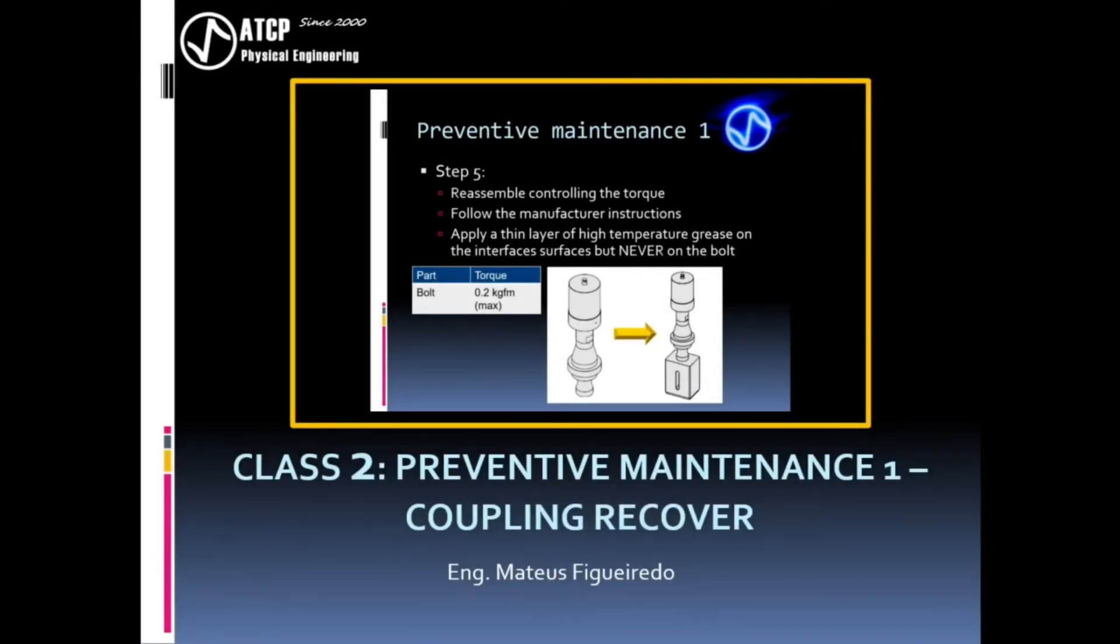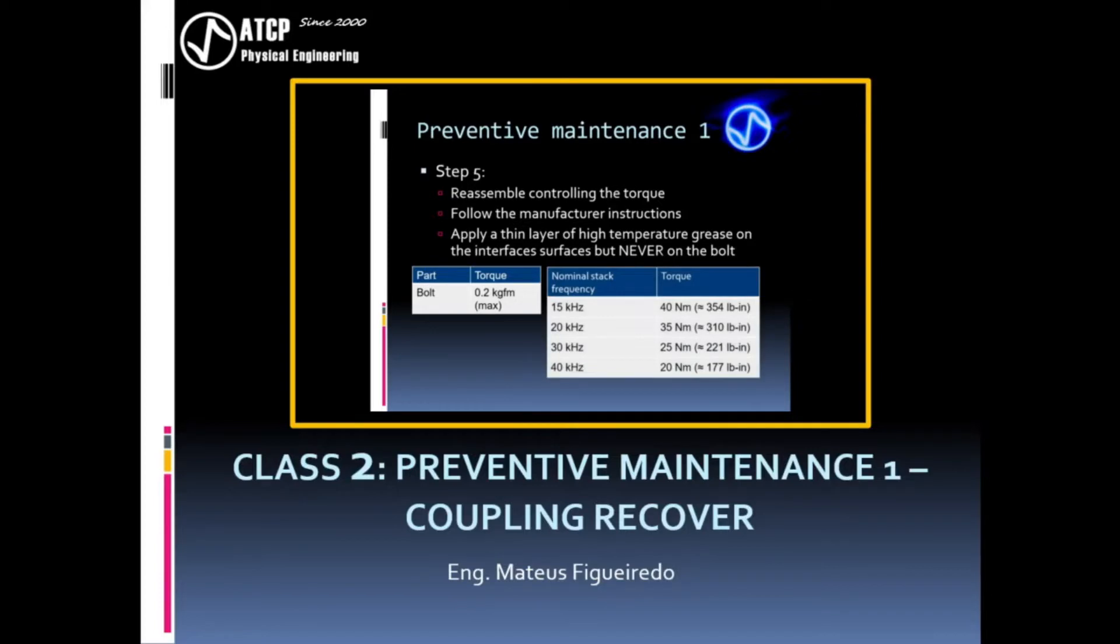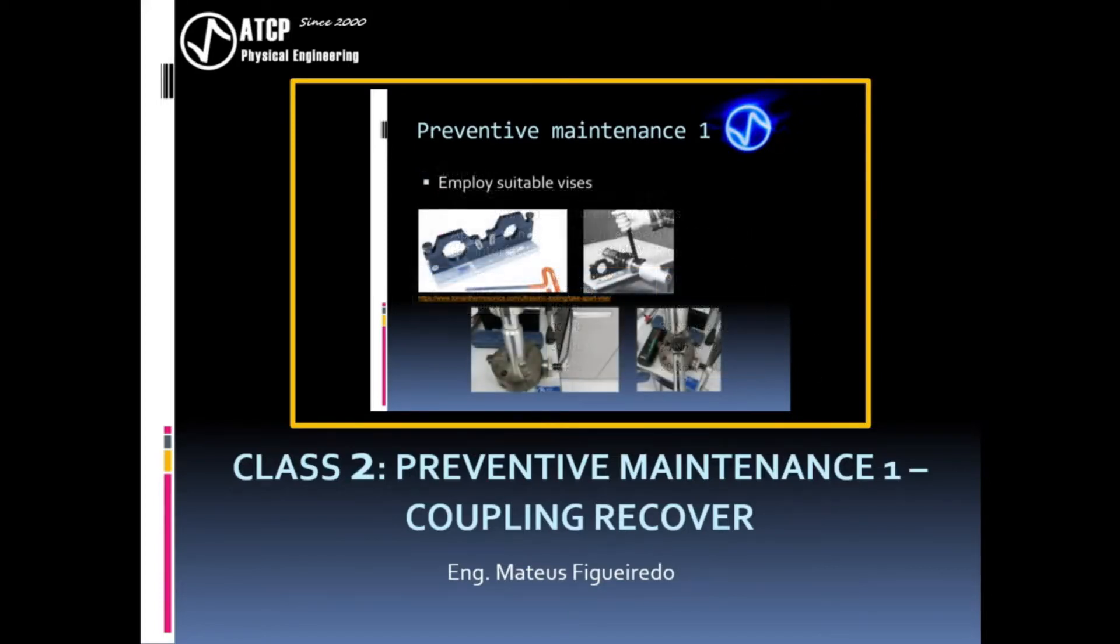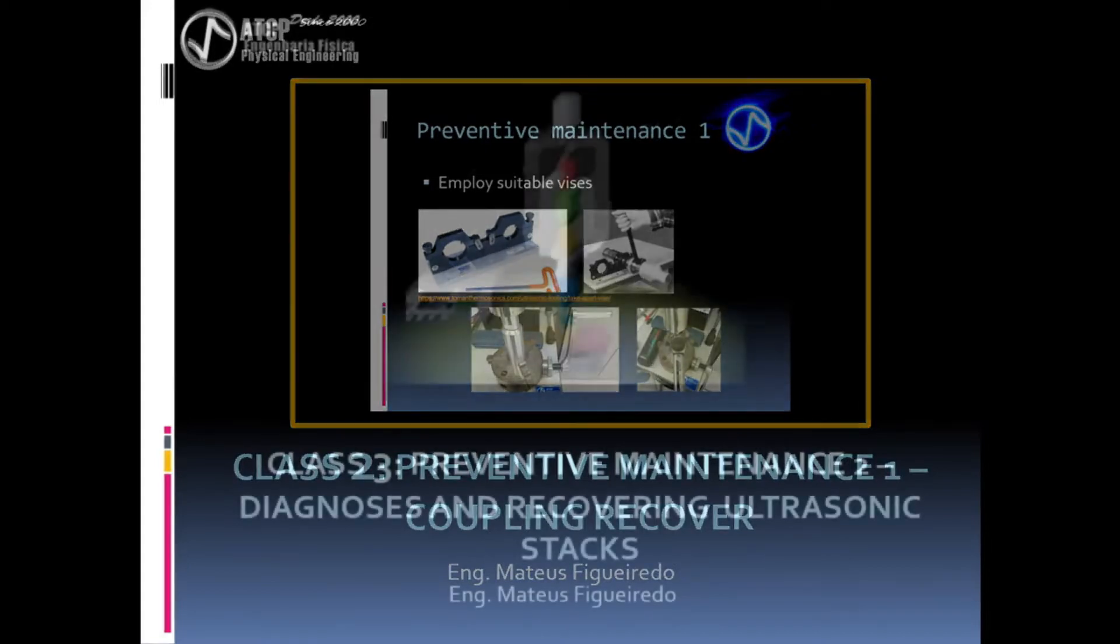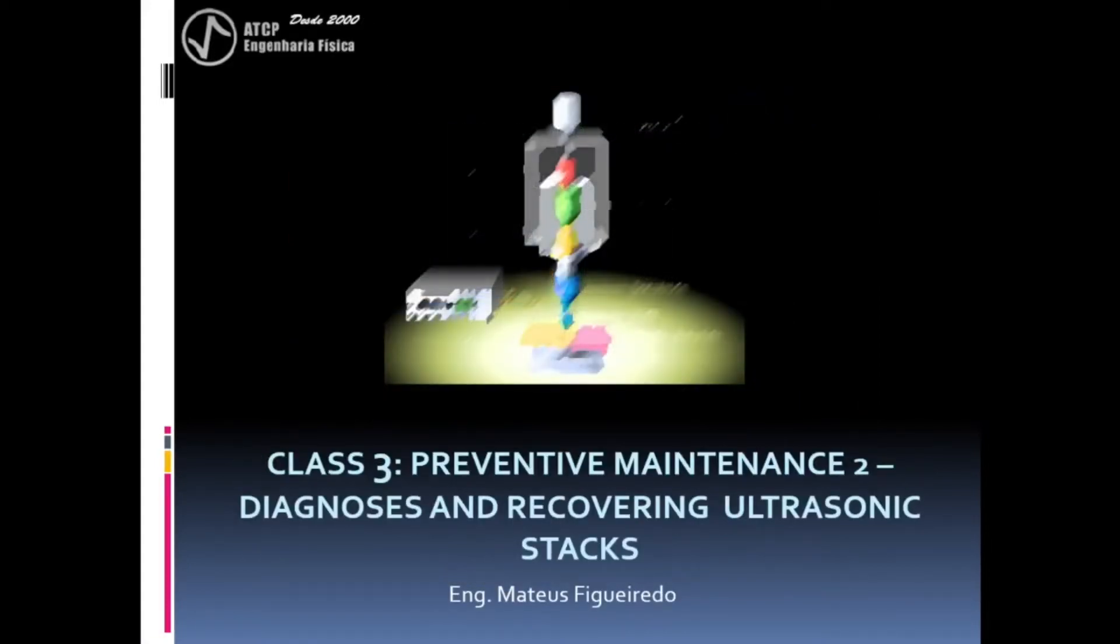In the last class, we covered preventive maintenance 1 that must be performed whenever frequency deviations are detected in order to restore the interface and coupling. In addition, we learned which procedures, cares, and tools are adequate for performing maintenance. In this class, we will discuss preventive maintenance 2. Now the aim is to identify and treat the defective elements that are still not working properly even after preventive maintenance 1.